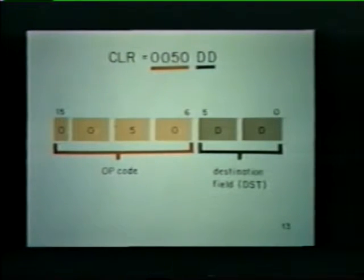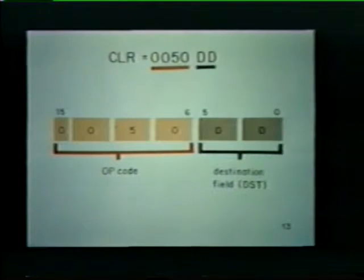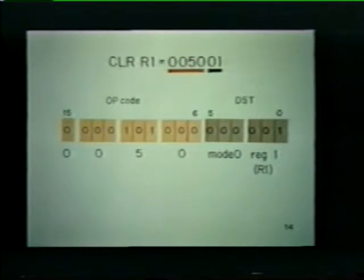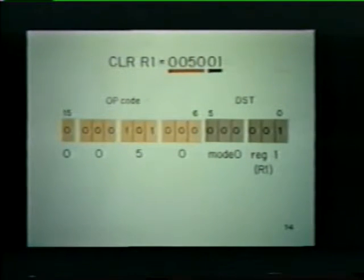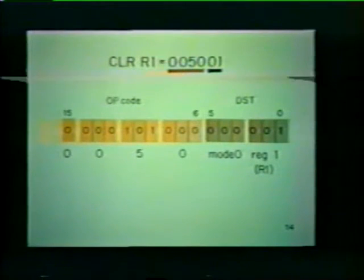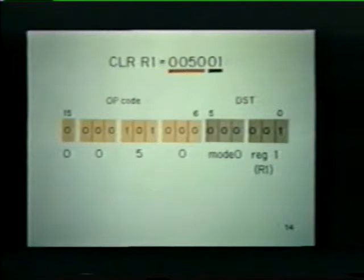CLR is the mnemonic for the clear instruction, with the corresponding code 0050DD. The 0050 is the opcode which specifies a clear operation, and DD indicates the two portions of the destination field used to specify the location of the operand. For example, with the last two octal digits 0 and 1, the 0 specifies addressing mode 0 and the 1 specifies register 1. Mode 0 in conjunction with R1 tells the instruction to operate on the contents of R1. Therefore this instruction says: clear the contents of register 1.